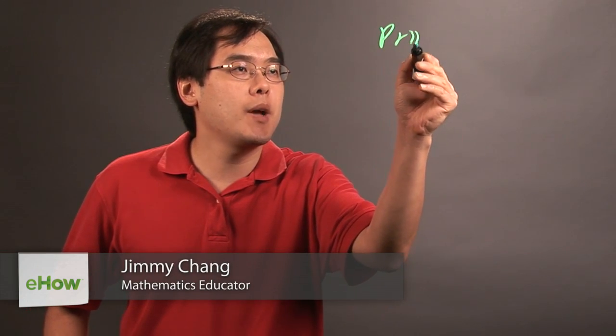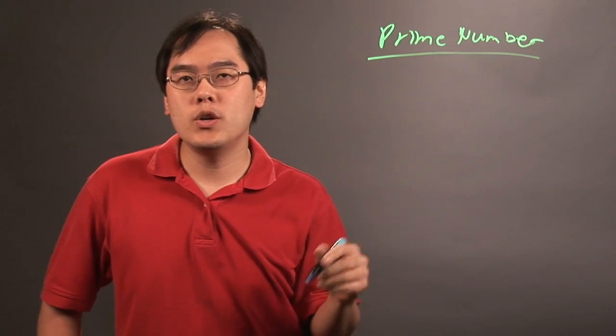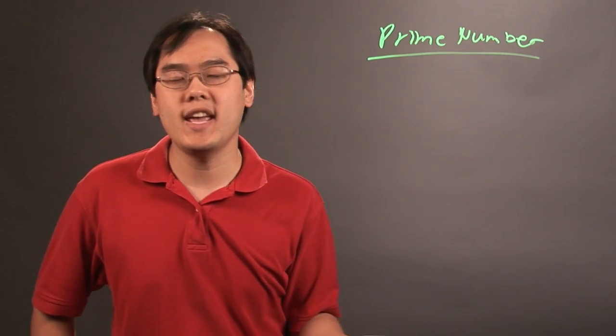Hi, I'm Jimmy Chang and we're here to answer the question which numbers are prime numbers. Now the rough definition of a prime number is a number whose only divisors are one and itself.